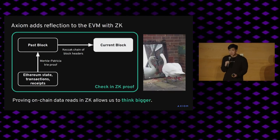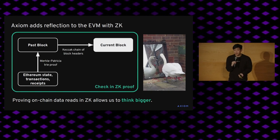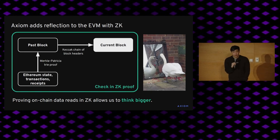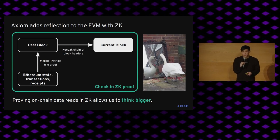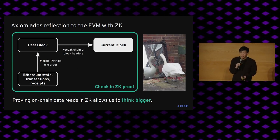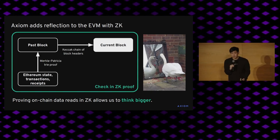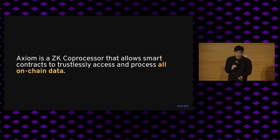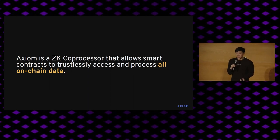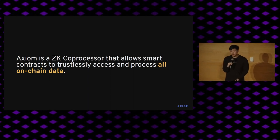What we're doing at Axiom is adding reflection to the EVM at scale using ZK. We wrapped that whole process of providing a Merkle-Patricia trie proof and a Keccak chain of block headers in ZK. From this perspective, the verification of all these proofs is compressed using the succinctness property, and that allows us to think a lot bigger and address much more powerful statements using reflection. We've packaged this into something we're calling a ZK coprocessor — something to allow smart contracts to trustlessly access and process all types of on-chain data.